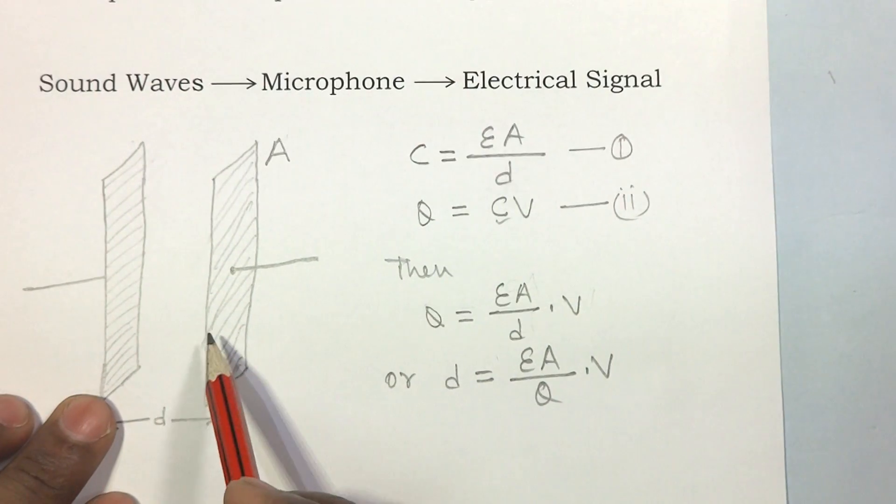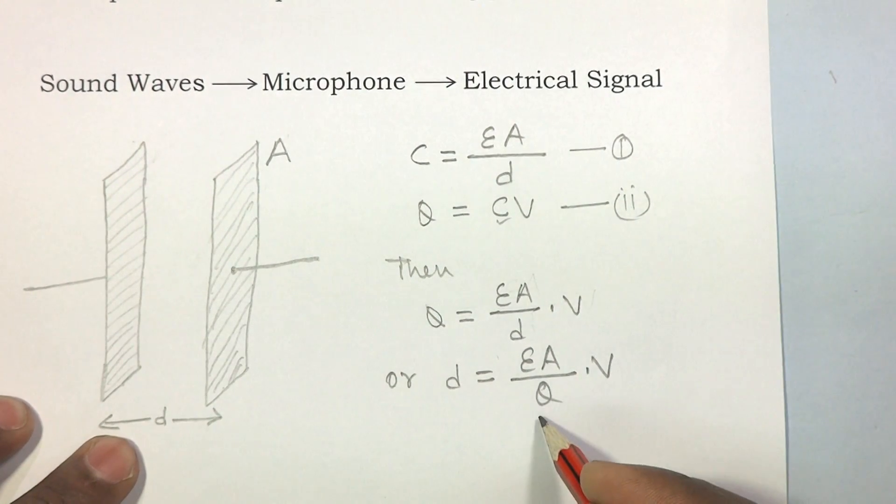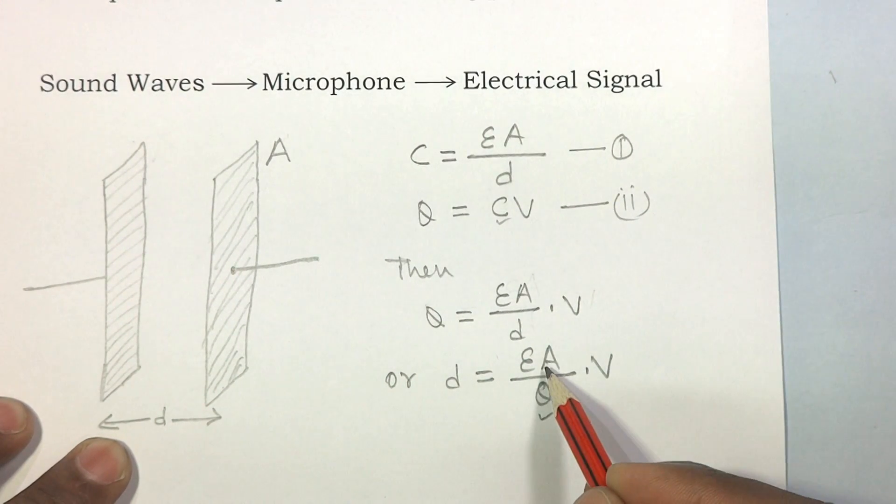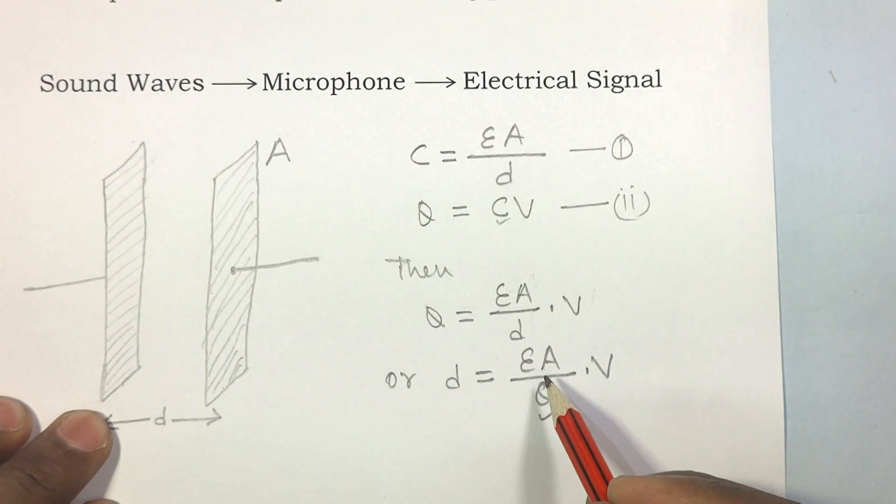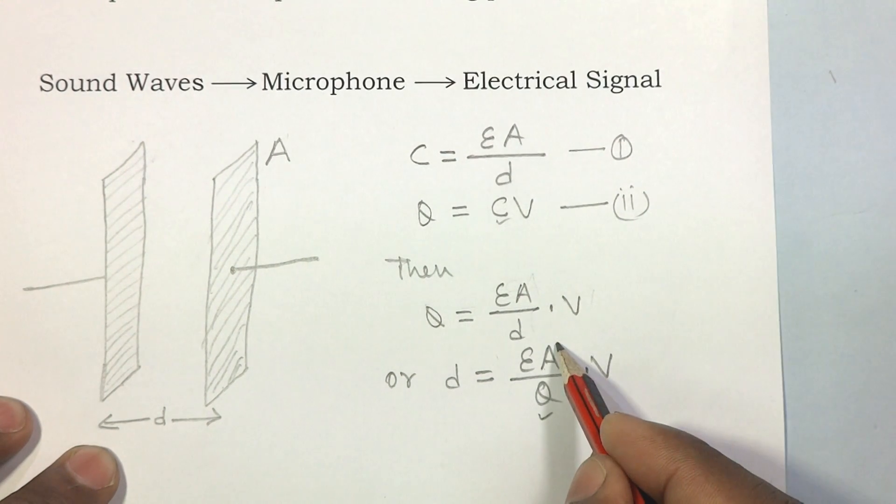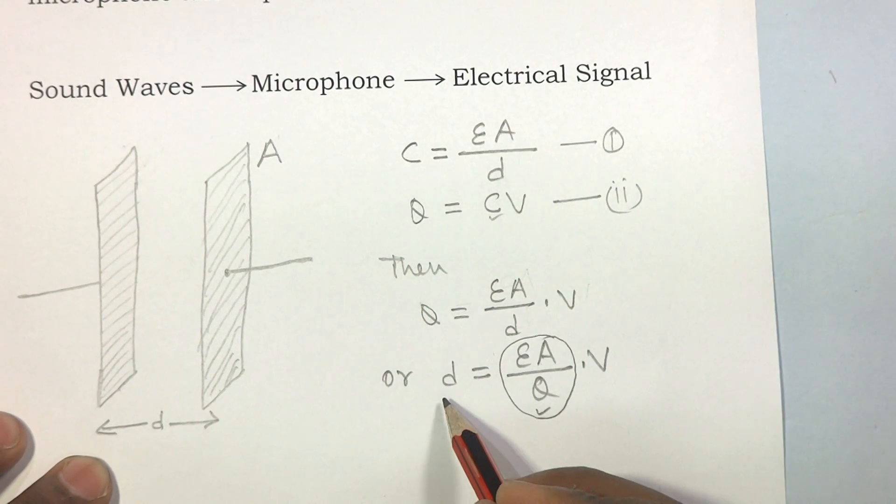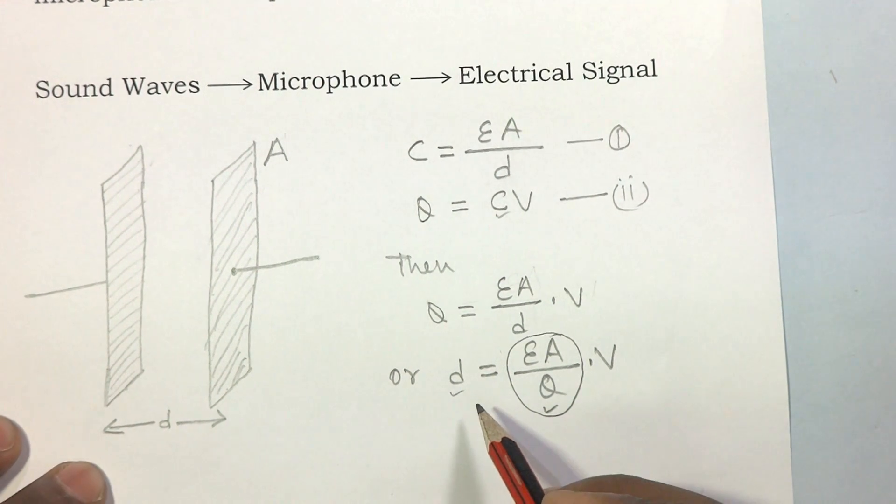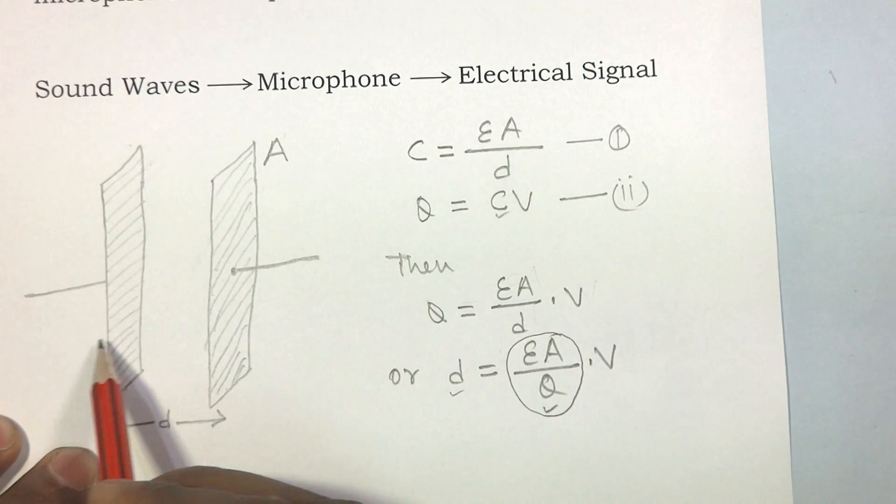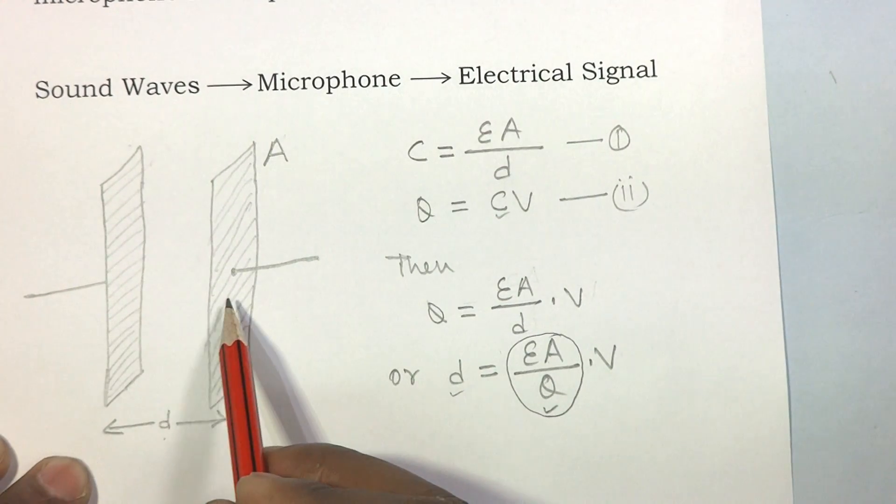If this capacitor is fully charged and is not being discharged, then Q will be constant for this condition. Effective area A is also constant since after manufacturing it is not possible to change. Epsilon is the dielectric constant, so this quantity becomes constant. D is not constant, as we discussed earlier, one plate of this capacitor is free to vibrate.